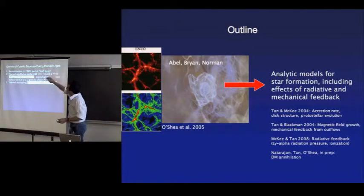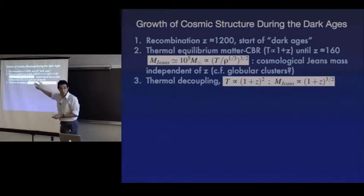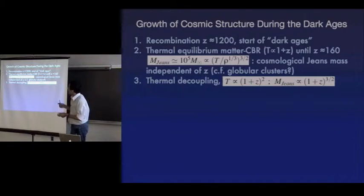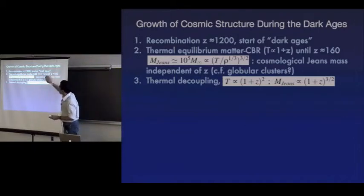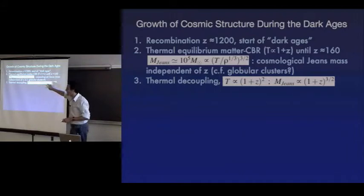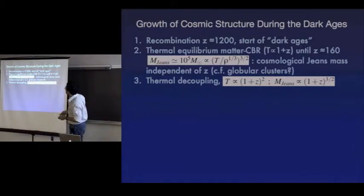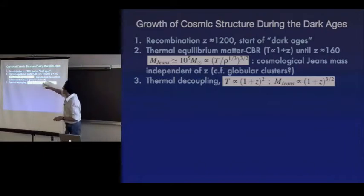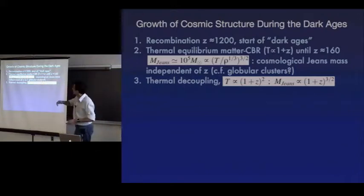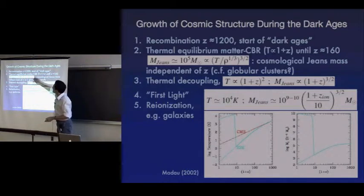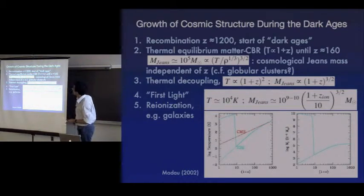Structure is forming in the dark matter. We have recombination at redshift ~1200, then thermal equilibration between the CMB and the gas until about redshift 160 due to residual electrons. The Jeans mass at this time is of order 10^5 solar masses — a cosmological Jeans mass including dark matter — and it's actually independent of redshift. This is actually fairly similar, incidentally, to globular cluster scale masses, though what the connection is, no one is really sure.